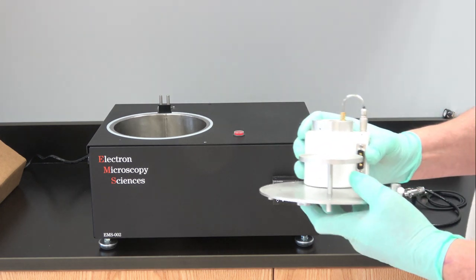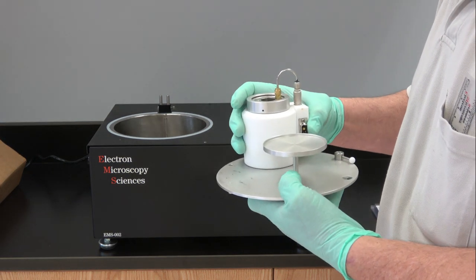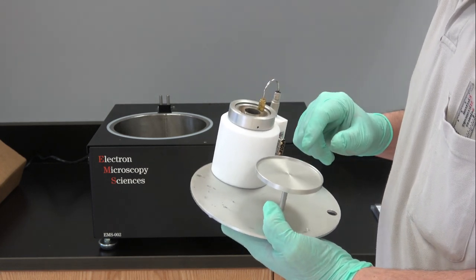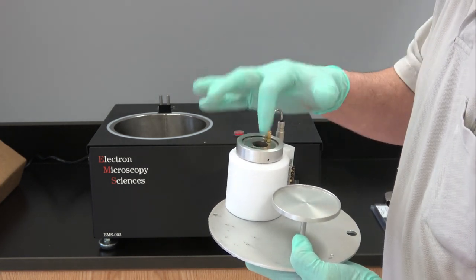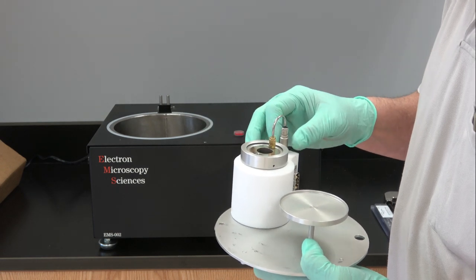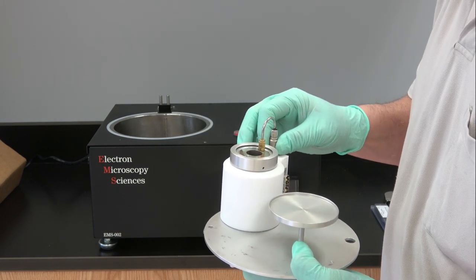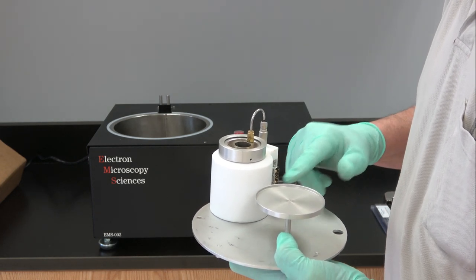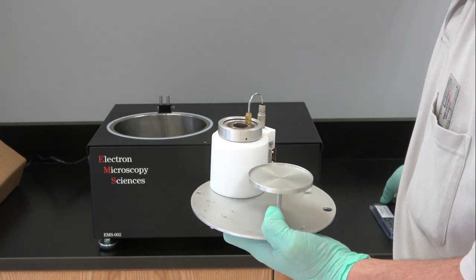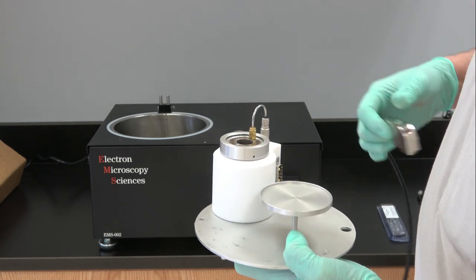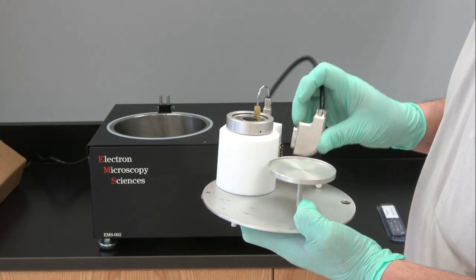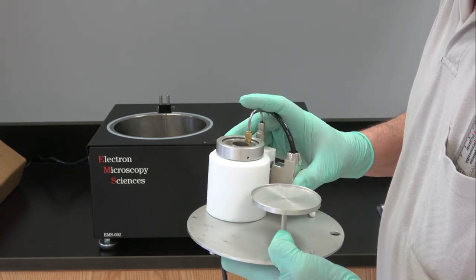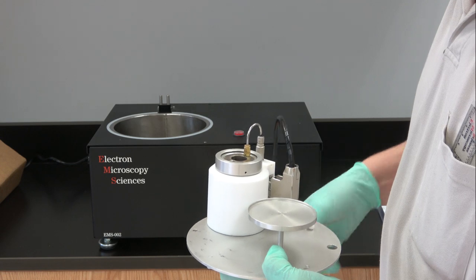First thing you would do is remove the condensation chamber insert which has three or four main parts to it. It has the condensation chamber. This is the electrical connection which for the most part you leave connected all the time. Another electrical connection which supplies power and your temperature sensor to the rest of the unit.